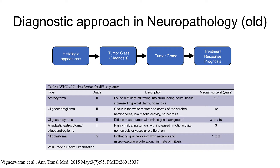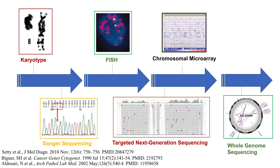The morphologic appearance of these tumors is what allowed us to assign a tumor class, and each tumor class had a unique grading scheme. For example, shown below in this table is the 2007 WHO grading scheme for diffuse gliomas. And once a tumor grade had been assigned, only then could a treatment approach be planned with predictions for prognosis and treatment responses.